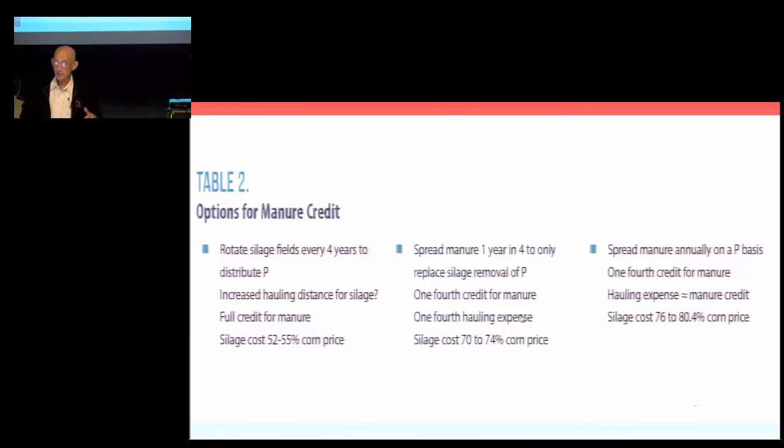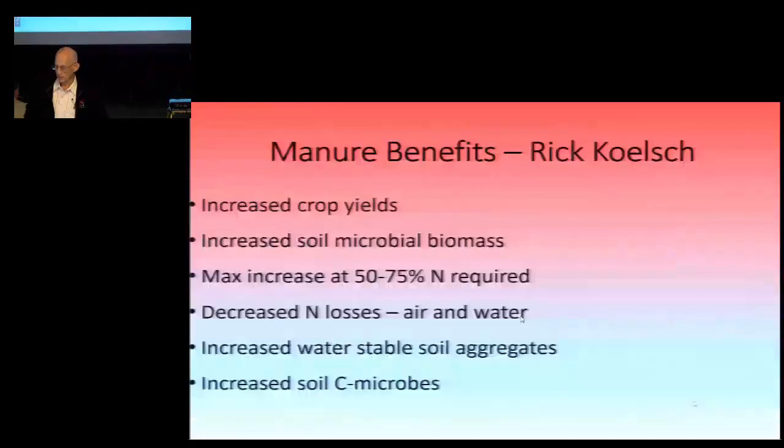The other option then, if you're cutting silage off the same field every year, that you just deliver manure every fourth year. Another possibility is to spread annually, but on a phosphorus basis, so you're spreading a fourth as much manure, so then you've got an increased cost of spreading because you're spreading light. So those are the options. I'm going to primarily talk about one year and four.